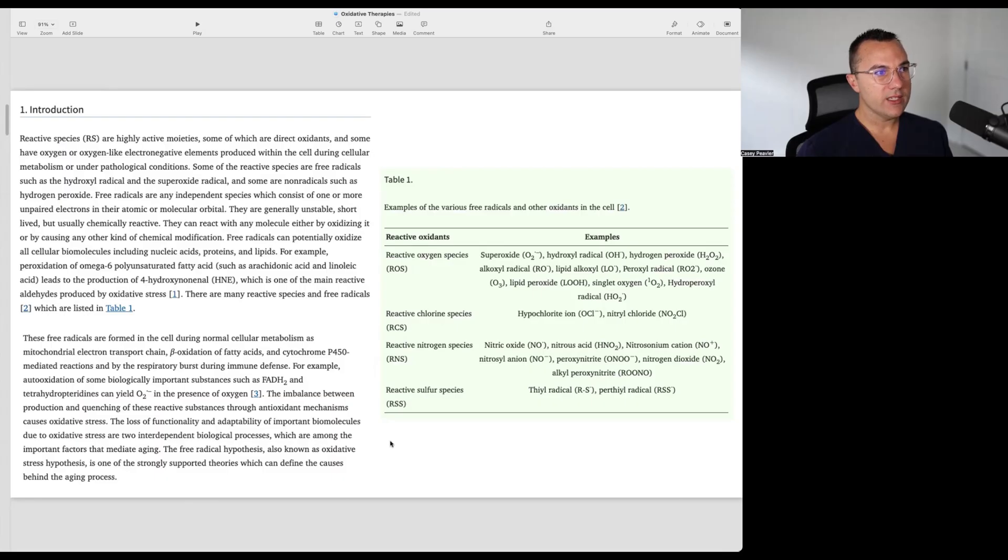These free radicals are formed in the cell during normal cellular metabolism, as mitochondrial electron transport chain, beta-oxidation of fatty acids, and cytochrome P450-mediated reactions, and the respiratory burst during immune defense. For example, auto-oxidation of some biologically important substances, such as FADH2 and tetrahydropteridines, can yield O2- in the presence of oxygen. The imbalance between production and quenching of these radical substances through antioxidant mechanisms causes oxidative stress. The loss of functionality or adaptability of important biomolecules due to oxidative stress are two interdependent biologic processes which are among the important factors that mediate aging. The free radical hypothesis, also known as the oxidative stress hypothesis, is one of the strongly supported theories which can define the cause behind the aging process.